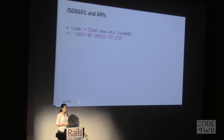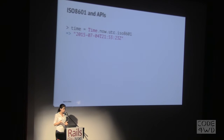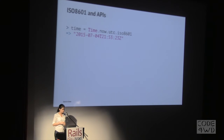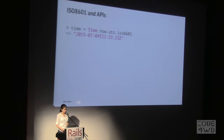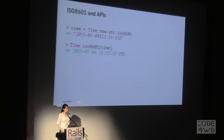If you are working with APIs, it's a recommendation to use the ISO 8601 standard. It's a good idea because it's human readable, unambiguous, widely supported, and sortable. This is an example of using Time.now.utc.iso8601. You can see that the string finishes with a Z, which means the time is in UTC. If you want to take a string or a timestamp that is ISO 8601 and convert it back to a local time, you can just do Time.iso8601 and pass it the timestamp you want to convert.